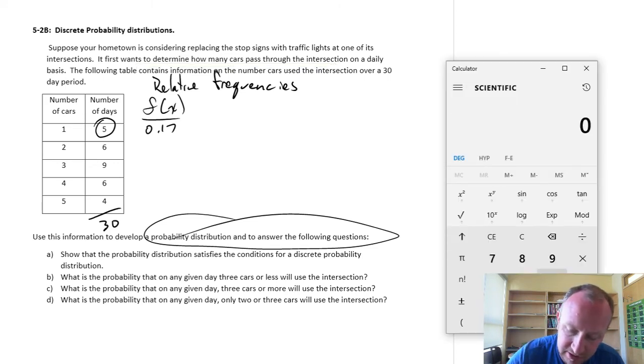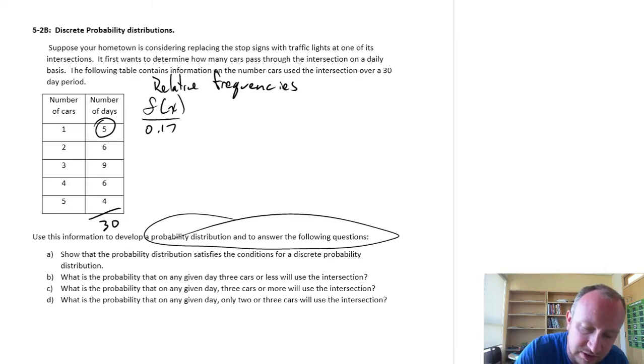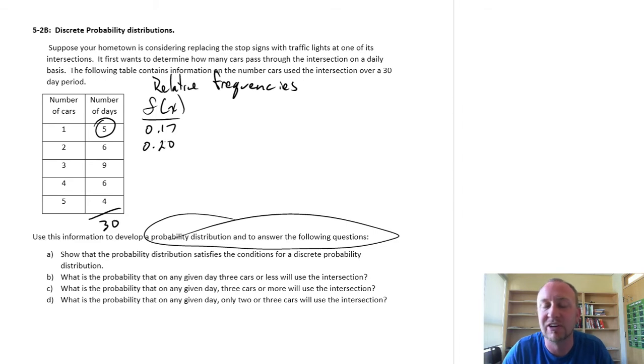Similarly, if we go through the next one, 6 divided by 30, so 0.2. So there's a 0.2 probability or a 20 percent chance that on a randomly selected day, only two cars are going to use that intersection.